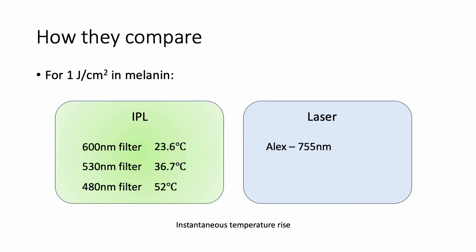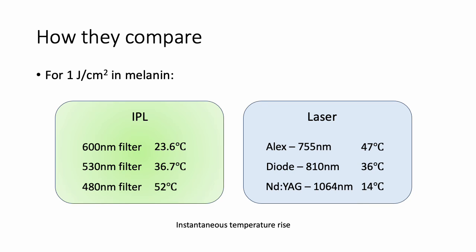For lasers, the Alexandrite laser at 755 nanometers — 1 joule per square centimeter in melanin — will generate a 47 degree increase in temperature, which is quite high, because melanin absorbs pretty strongly at 755 nanometers. For a diode laser at 808 or 810 nanometers, the absorption is not so strong, so the temperature rise is about 36 degrees centigrade — equivalent to IPL using the 530 filter. The Nd:YAG laser at 1064 nanometers will only generate about 14 degrees Celsius because the absorption by melanin at that wavelength is so low. This is why Nd:YAG lasers need to use high fluences to achieve any kind of results.